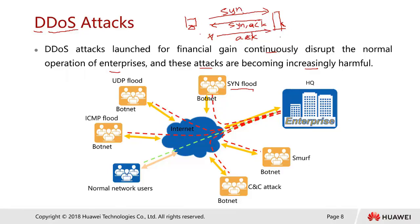But with a distributed DoS, if we have 100,000 machines acting as zombies — like the walking dead — all launching this SYN attack simultaneously, the server gets hit with hundreds of thousands or millions of half-open sessions, which could bring it down. This is the SYN flood. A botnet refers to a network of machines already infected by malware that have become a network of zombies.